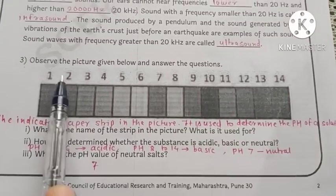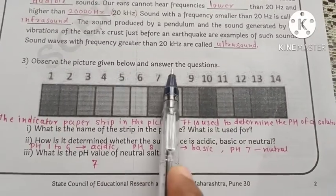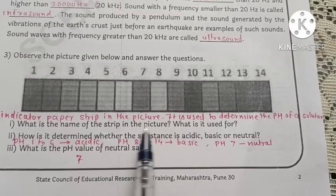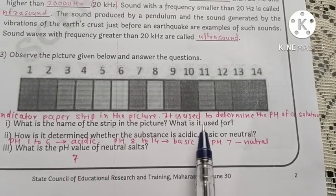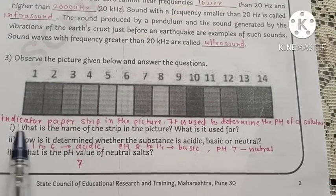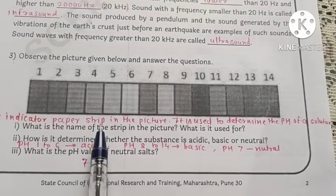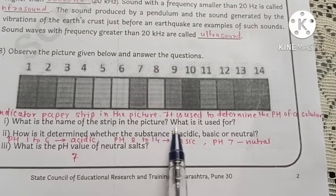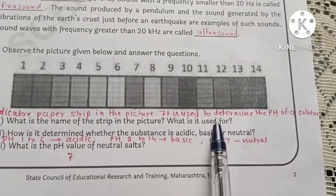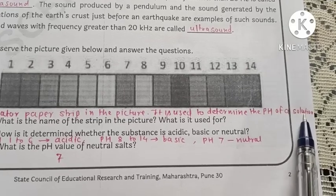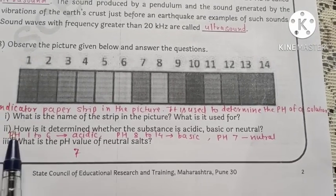Question number 3: observe the picture given below and answer the questions. What is the name of the strip in the picture? What is it used for? Name of the strip is indicator paper strip. Uses: it is used to determine the pH of a solution.